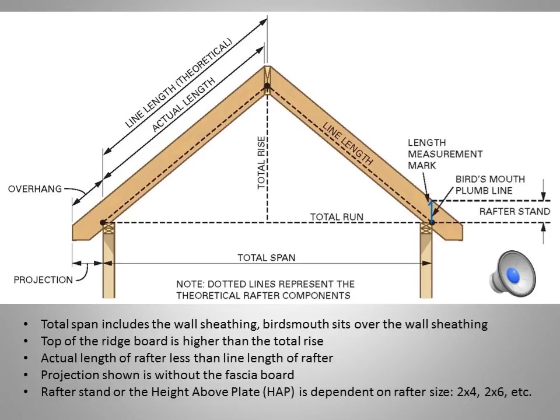On the bottom end of the rafter we have the tail that hangs out. The dimension referred to as projection is measured on the horizontal; the same distance on the slope is called the overhang. Many people mix these terms up — they say roof overhang when they really mean roof projection. If on a set of plans you're given a 16-inch projection, that includes the rough fascia, which is usually 1½ inches thick. So when cutting your rafter, the tail should have a 14½-inch projection, so that once the fascia is nailed on you have what was asked for.